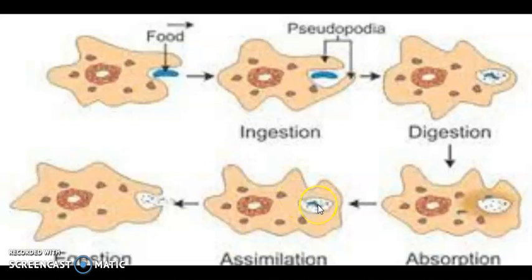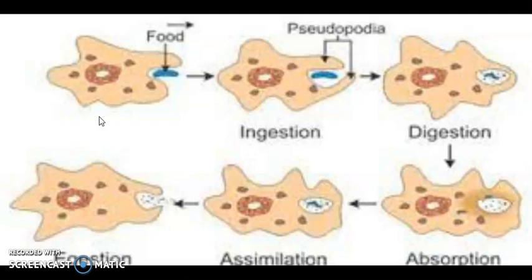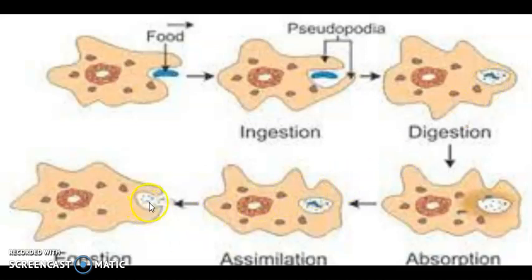The vacuole then contains unwanted undigested material, and this vacuole opens out so that the waste material exits the body. Amoeba is aquatic, found mostly in stagnant water, has no particular shape, and contains a nucleus, cytoplasm, and vacuoles. Depending on their function, vacuoles can be called food vacuoles if food is present, or excretory vacuoles if they function to excrete waste. That is all for today's chapter on nutrition in animals. Thank you all.